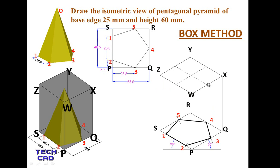Now find the center of the top face WXYZ. Draw center lines by joining the midpoint of WX to the midpoint of ZY, and the midpoint of ZW to the midpoint of XY. Wherever these centerlines meet is exactly the center of the WXYZ face. This point is the apex O of the pyramid.